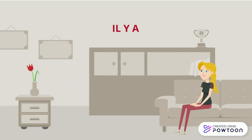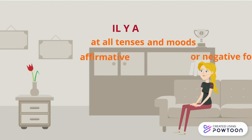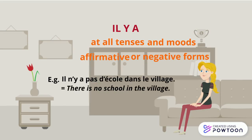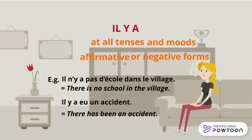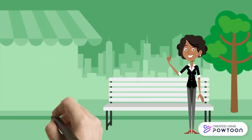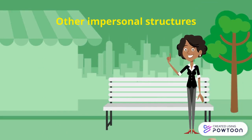Be careful, do not mistake il y a for il a, which means 'he has.' Once again, il y a can be conjugated at all tenses, moods, in affirmative or negative form. For example, il n'y a pas d'école dans le village (there is no school in the village).